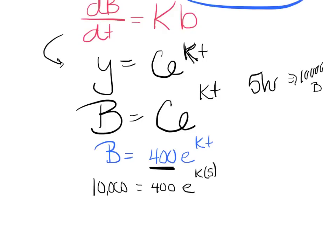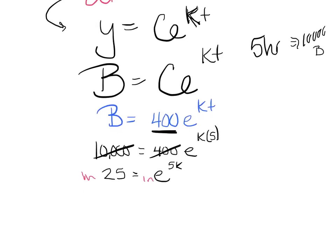I'm going to divide out my 400, and that's 25 equals e^(5k). Simply take the ln of both sides to kill the e. Nice little zap rule. Just remember that the ln of e is 1. It doesn't disappear. So I've got ln(25) equals 5k. So my constant of proportionality, my k value, is ln(25)/5.